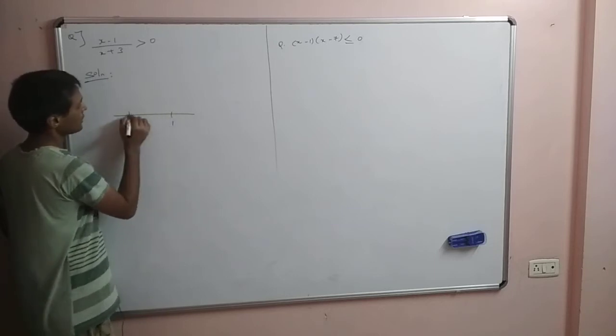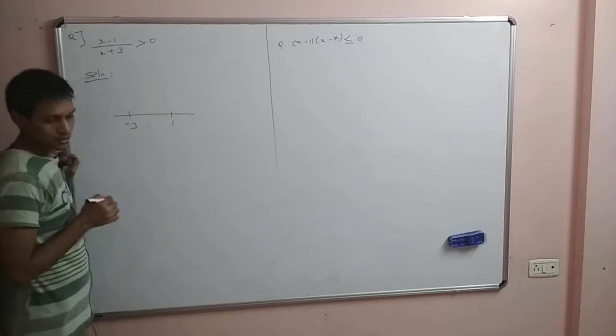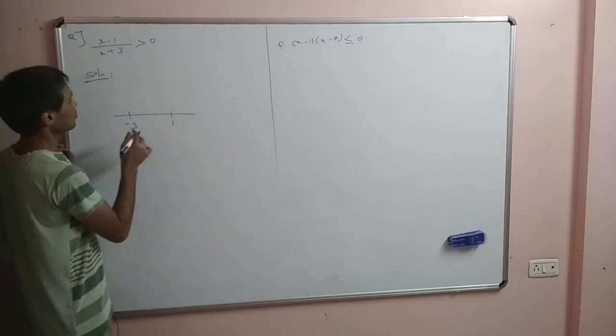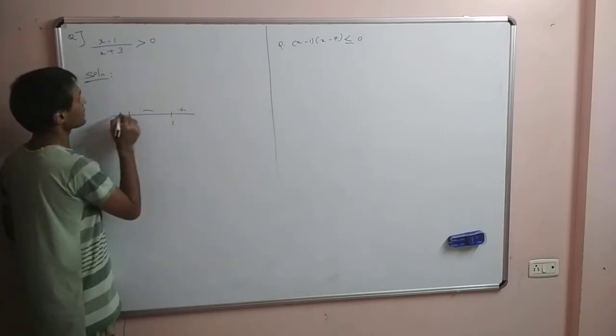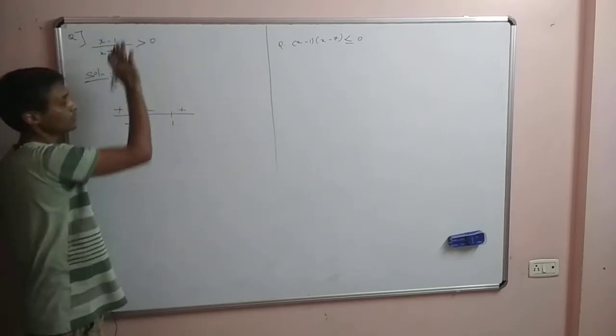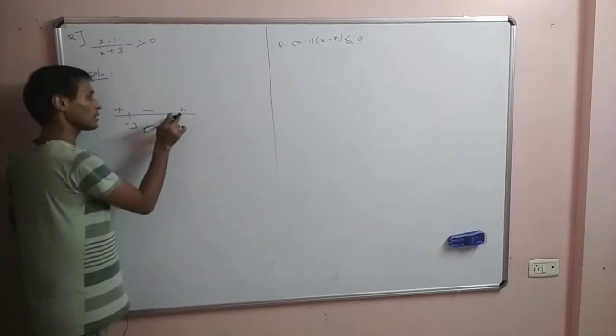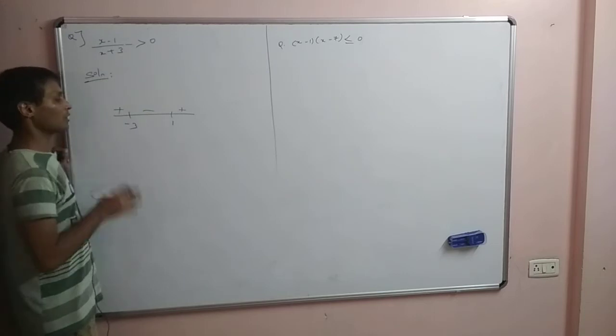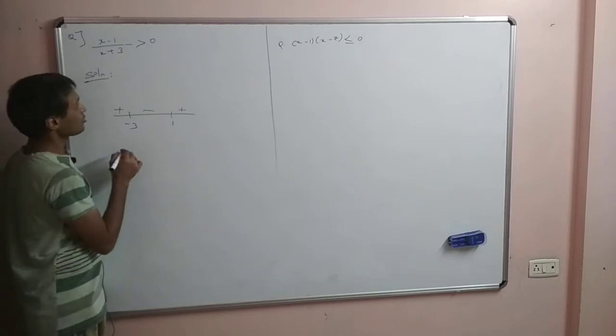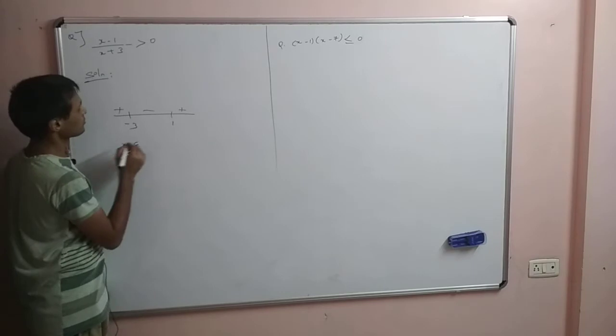So 1 is minus 2. Here will be plus minus plus. So the power is equal to 1. So this is equal to 1. So here will be plus minus plus. But if we solve this problem, x belongs to 1.